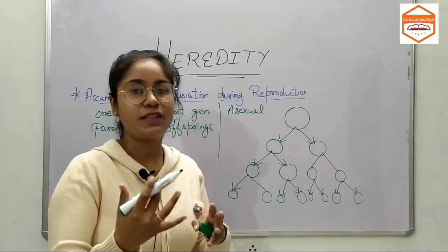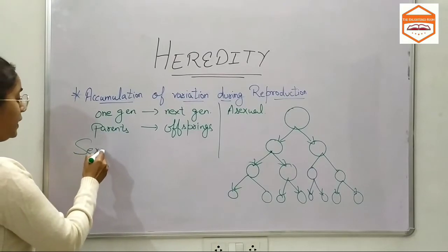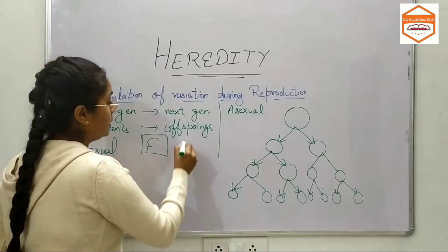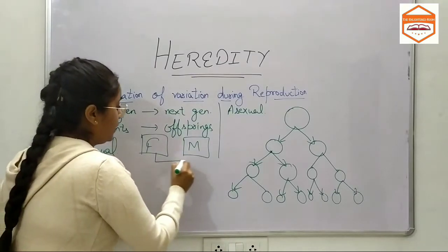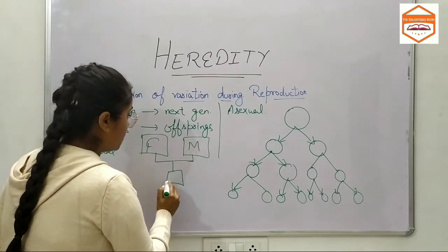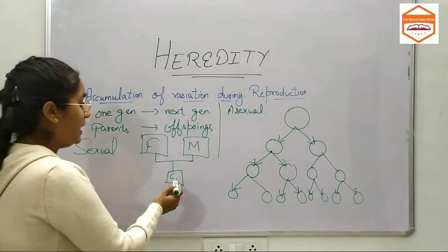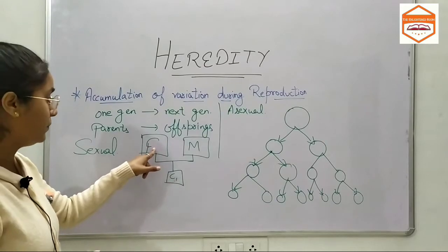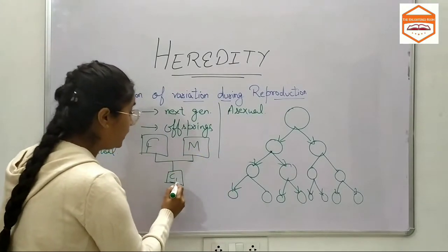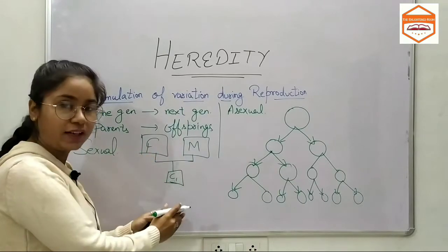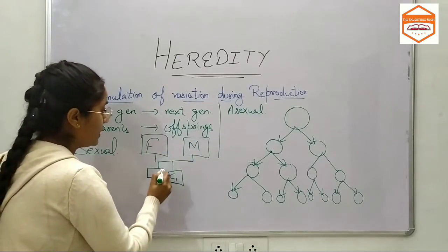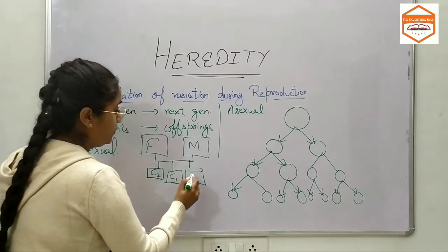When we talk about sexual reproduction, there is not a single parent — there are two parents, that means one is father and the other is mother. The offspring they would have — child one — would have some similarities or variations from father and from mother. The child would receive some characters from father as well as from mother. Similarly, if these two parents have three kids, this is child two and this is child three.